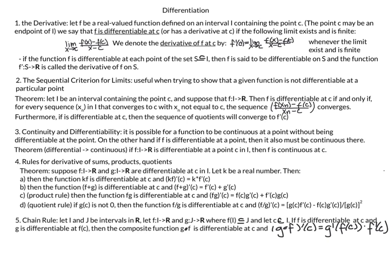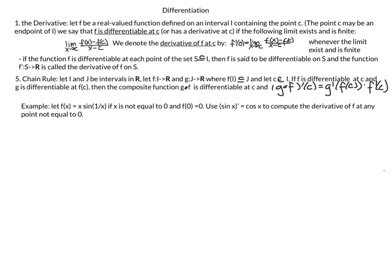The chain rule: let f: I → ℝ and g: J → ℝ where f(I) ⊆ J, the domain of g. Let C be a point in I. If f is differentiable at C and g is differentiable at f(C), then the composition g ∘ f is differentiable at C and its derivative is g'(f(C))·f'(C). This is the same chain rule from first-year calculus.